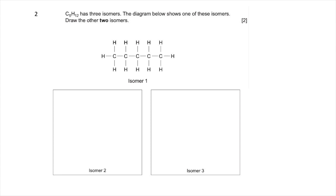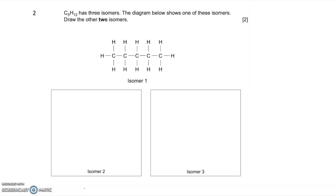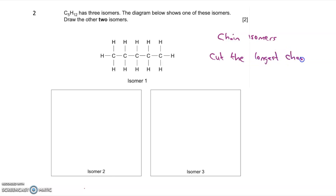Here's the last exam question. Read the question, pause the video, have a go at it, and then we'll go through the answers. In question two we have a molecular formula of C5H12, which has three isomers. The diagram shows one of these isomers — isomer one is pentane — and they're asking you to draw the other two isomers. With chain isomers we need to cut the length of the longest chain down: first from five to four, then from four to three.